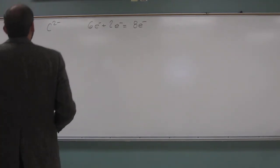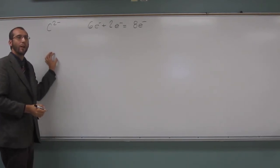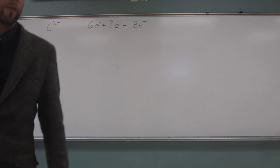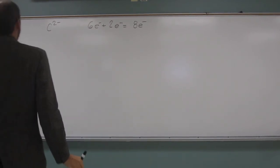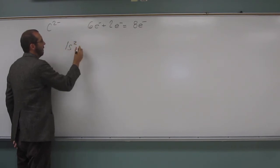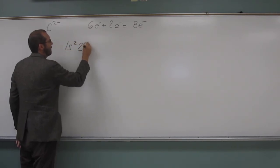So how do we start our electron configuration? We start with the bottom or the hydrogen, right? So how do we start it? Can anybody help me out? One s. One s, yeah. So 1s², then next, 2s².